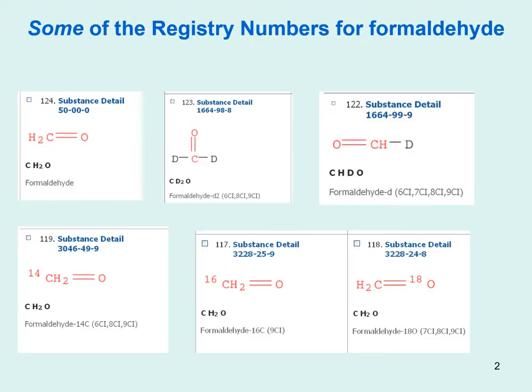To show the level of detail, I'm looking at one substance: formaldehyde. It's a very familiar chemical formula, and there is its registry number. You can see the number 124 next to it at the top — there are 124 different variations of formaldehyde, and each variation has its own unique registry number. I'm only showing five of these variations. The second one is dideuterated formaldehyde; the next is just deuterated without specifying further. If it's carbon-14 labeled, that is there also. Carbon-16, oxygen-18, and so on.